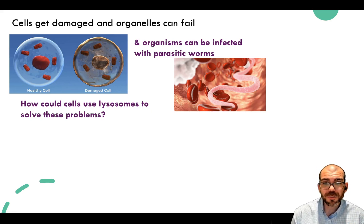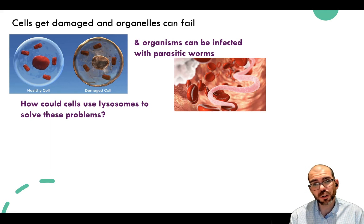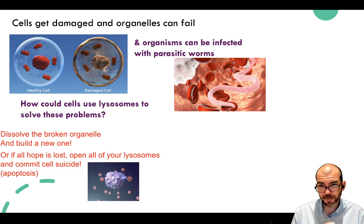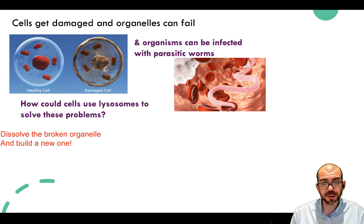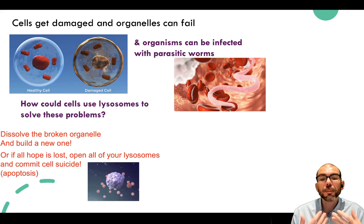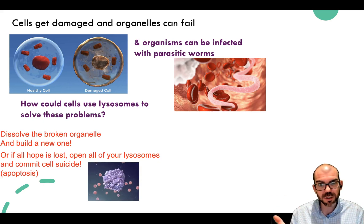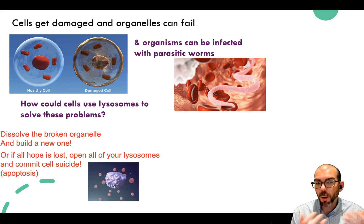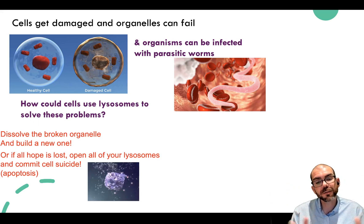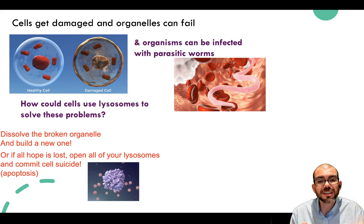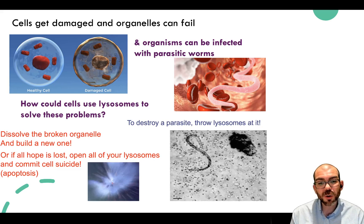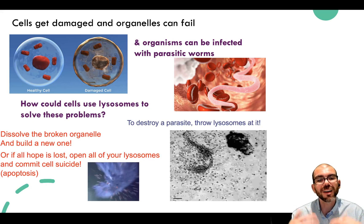Cells can get damaged and organelles often fail, and organisms can become infected. Lysosomes help solve all of these problems. If an organelle breaks down, a lysosome will dissolve it and it'll be used to build a new one. If a cell is beyond repair, it can be triggered to undergo apoptosis, or cell suicide—signaling the cell to open all of its lysosomes at once, dissolving from the inside out. This benefits the organism because it's better for one harmful cell to self-destruct than to reproduce. Against parasitic worms, lysosomes act as little grenades to dissolve them into chunks the body can remove.